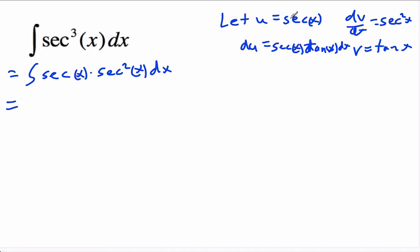This is going to be equal to uv, which is secant x tan x, minus the integral of v du, which is secant x tan squared x dx.